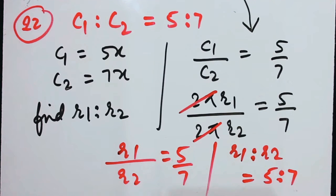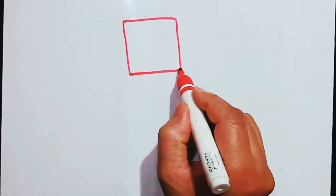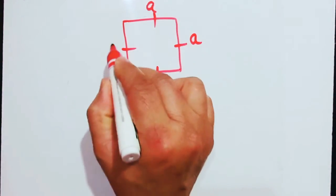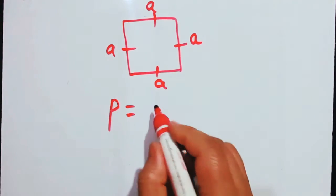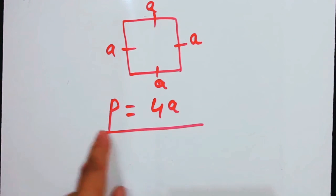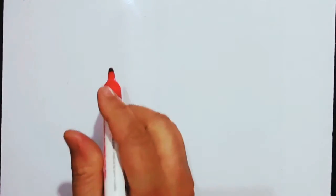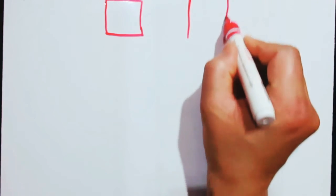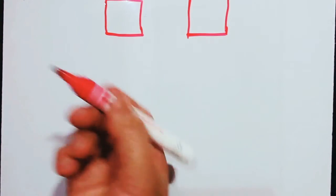Number 23: the perimeters of two squares are in the ratio 8 is to 15. Remember the square — all sides are equal — if the side is 'a', the perimeter equals a + a + a + a equals 4a. They are talking about two squares, square one and square two.